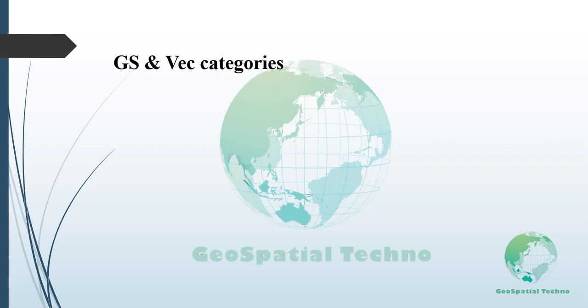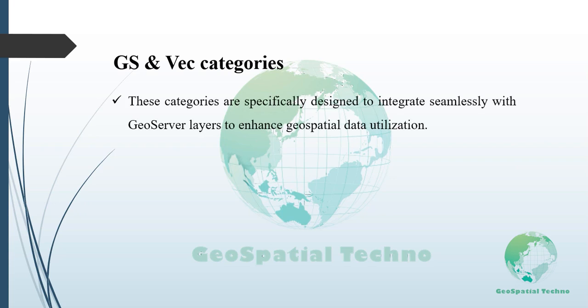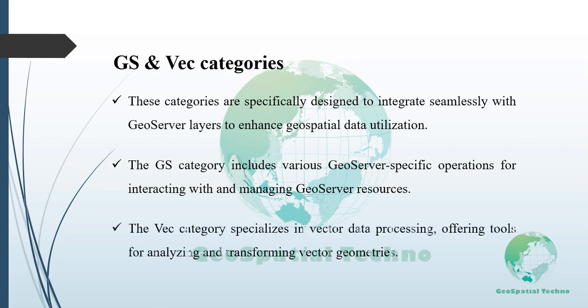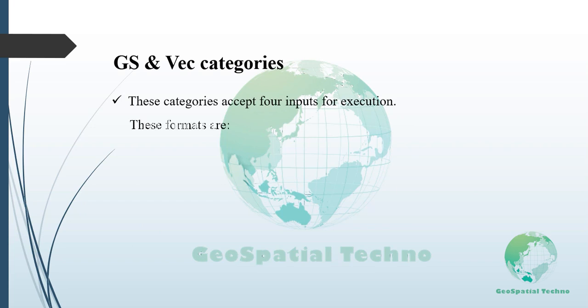The GS and WEC categories are specifically designed to integrate seamlessly with GeoServer layers, thereby enhancing the utilization of geospatial data. The GS category includes various GeoServer-specific operations for interacting with and managing GeoServer resources, while the WEC category specializes in vector data processing, offering tools for analyzing and transforming vector geometries. They accept four inputs for execution: Text, Reference, Subprocess, and Vector Layers.